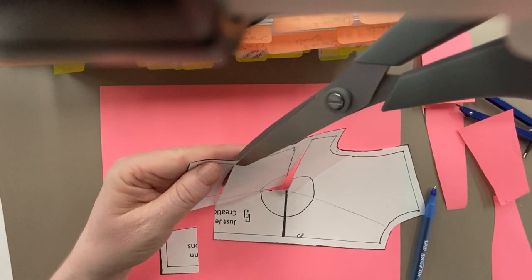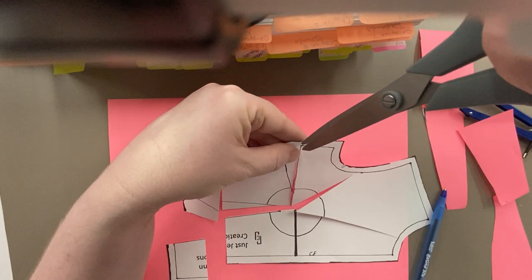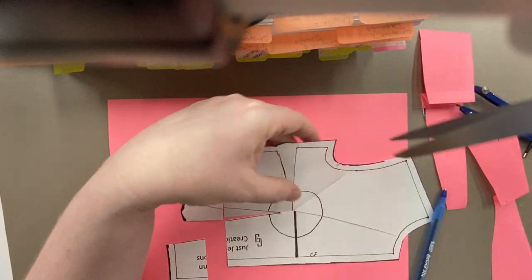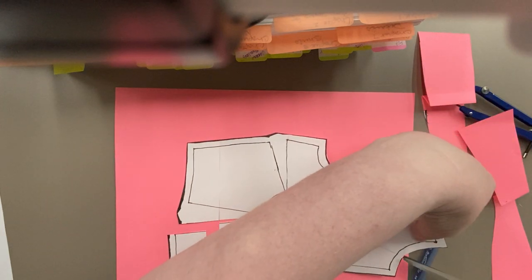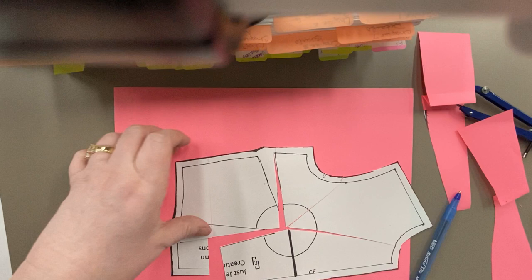A relief cut over here on the seam allowance. To, but not through. To, but not through. To, but not through. And to, but not through. So that all my paper pivots.